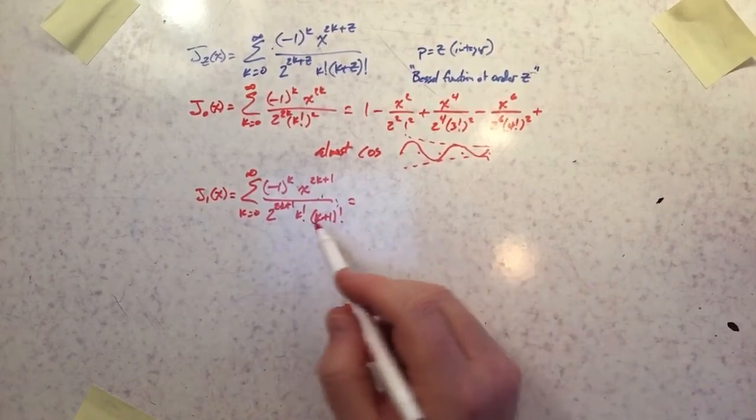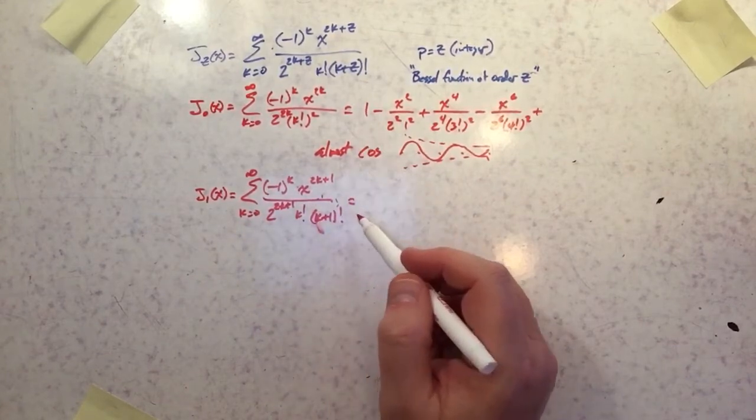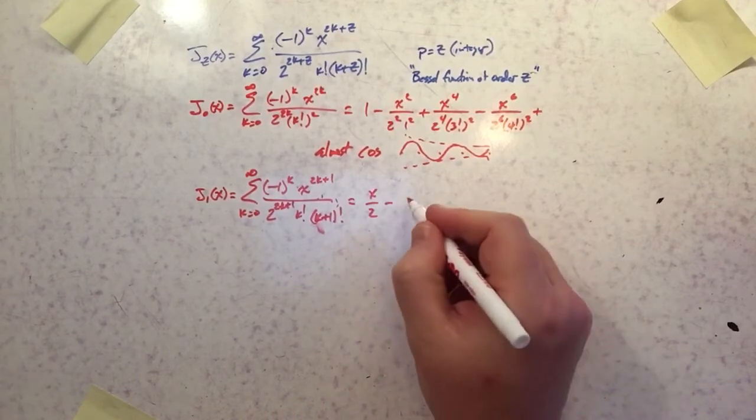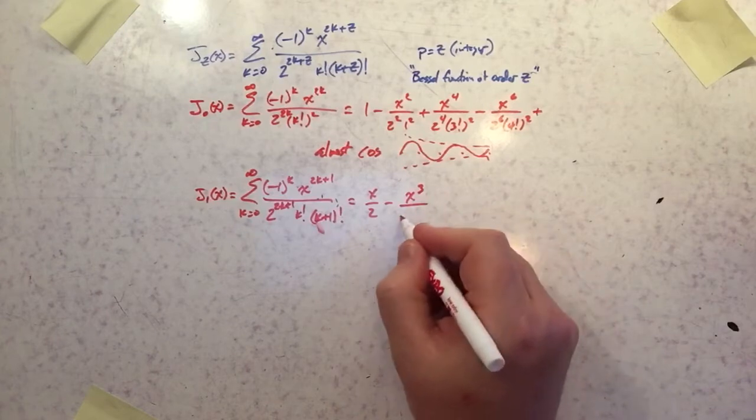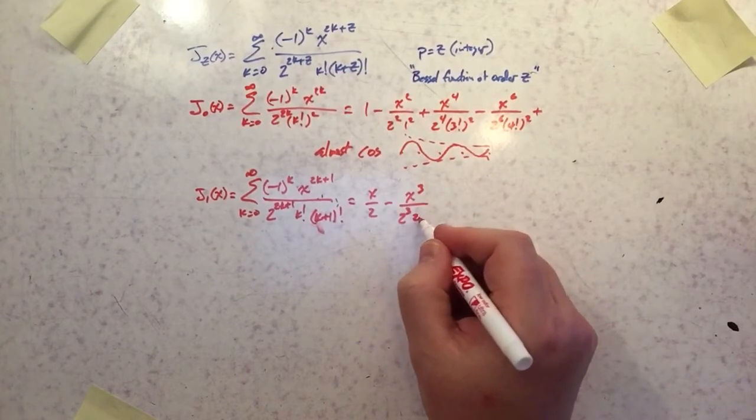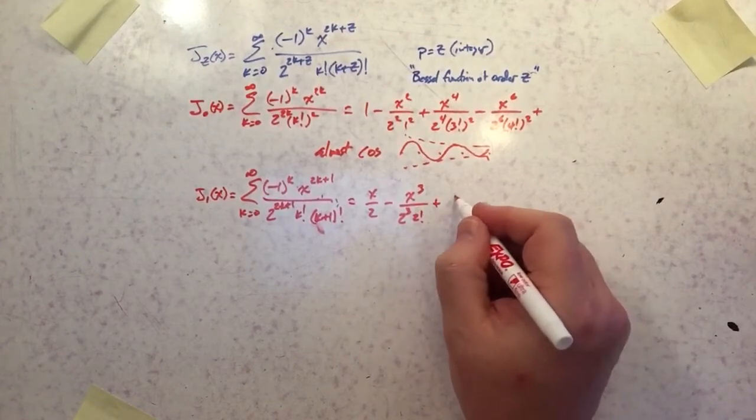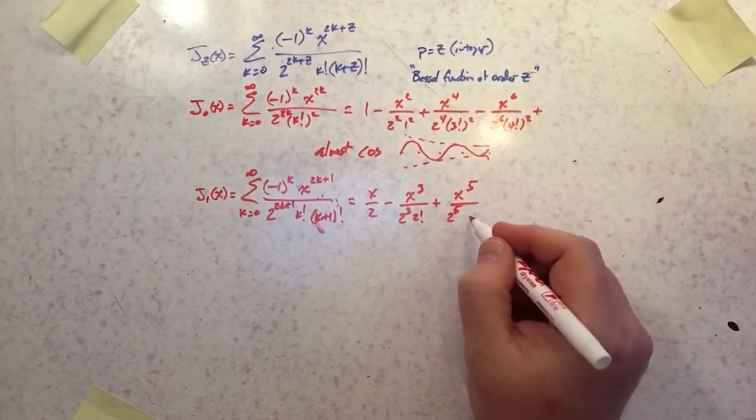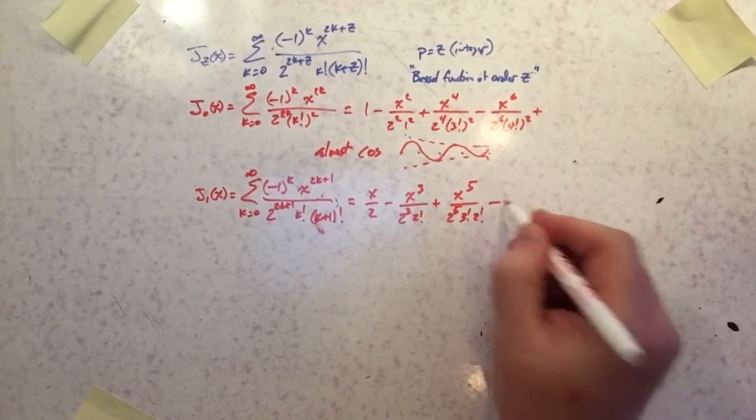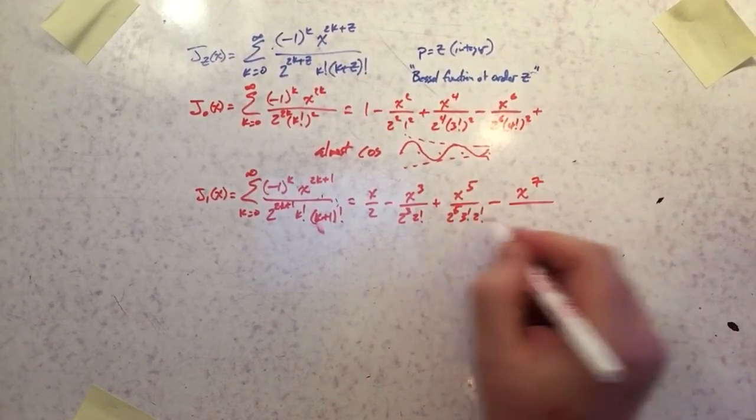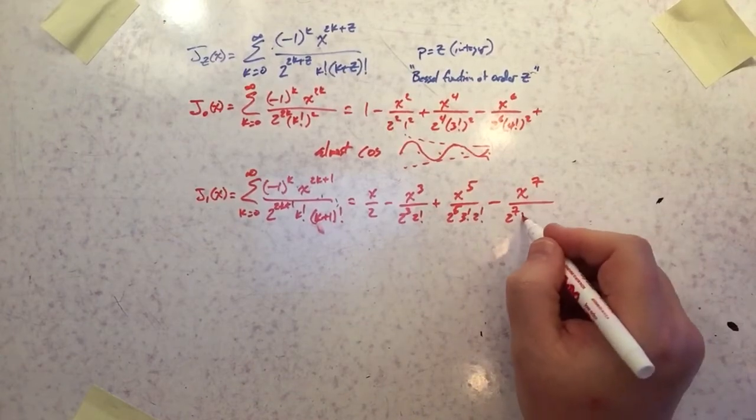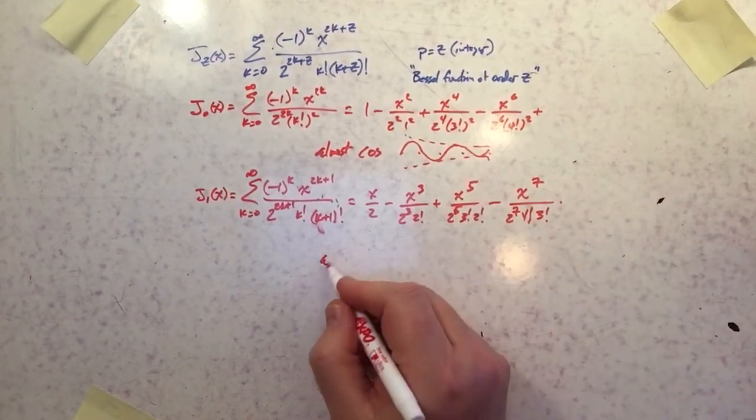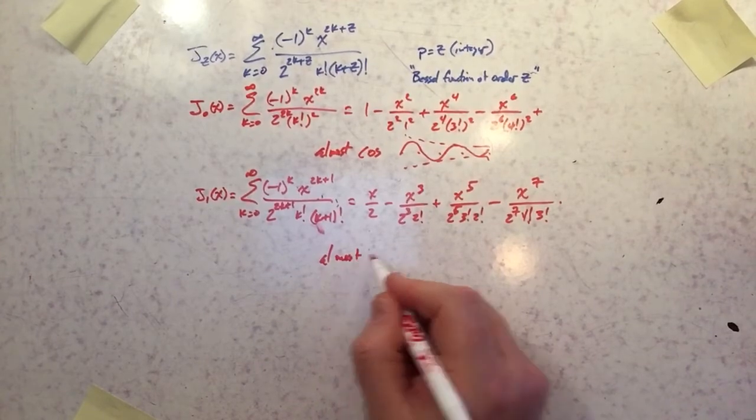So what it's going to produce, there's no constant term. The first term is x over 2 minus x cubed over 2 cubed times 2 times 1 factorial, plus x to the 5th over 2 to the 5th and then 3 factorial and 2 factorial and then minus x to the 7th over 2 to the 7th times 4 factorial, 3 factorial. And as you might expect this looks an awful lot like a sine function.